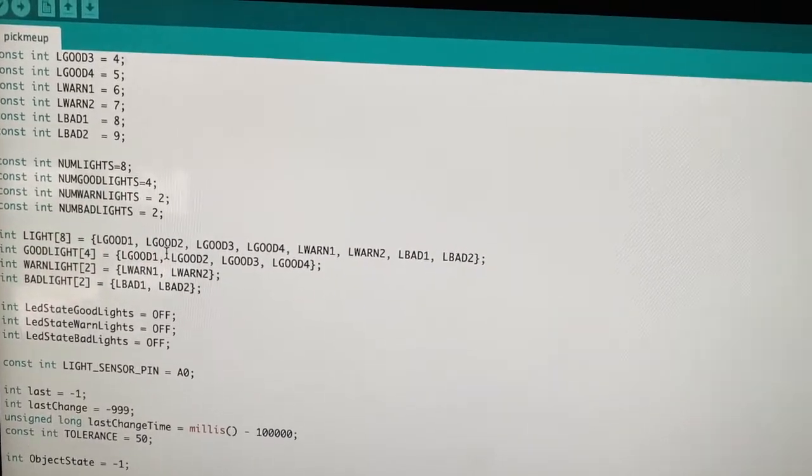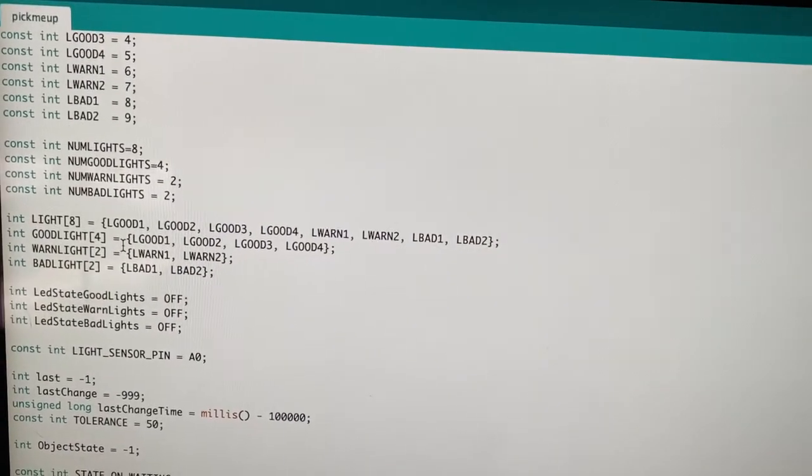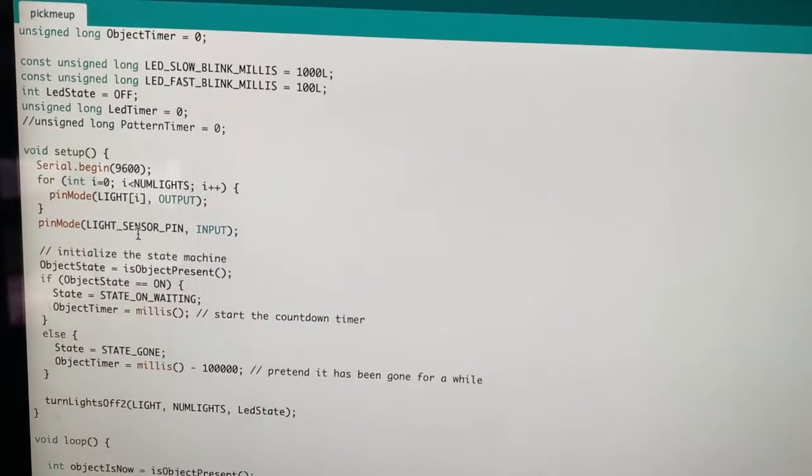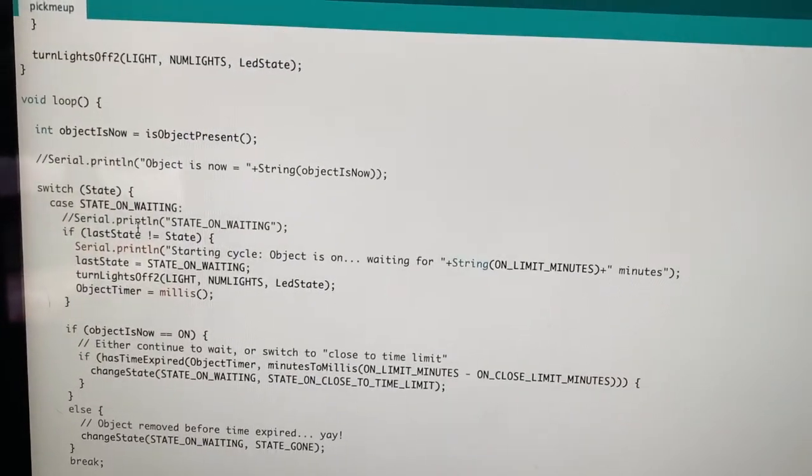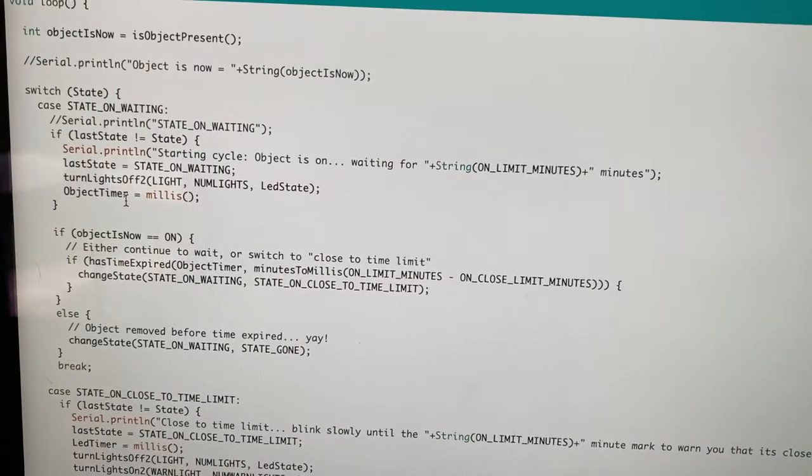And if we scroll down, we see there's a bunch of different arrays to contain the different types of lights, more global settings, some setup. And in the loop, the main part of the loop is really a state machine.